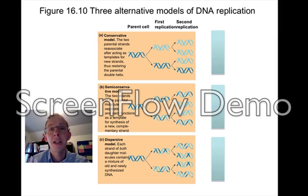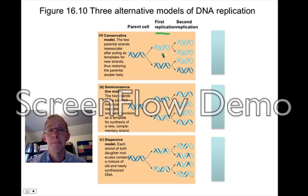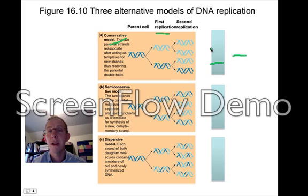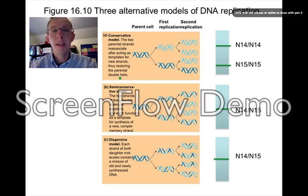I'd like you to predict what you think you would see after completing the same experiment as Meselson and Stahl, starting with just the first replication. After just one replication, if you were to harvest the DNA from the bacteria now growing in N14, what would you expect to see? For the conservative model, we would expect to see one band of heavy N15/N15 and another lighter band containing only N14. Take a moment and do the same for both the semi-conservative and the dispersive model — how many bands would you expect to see, and approximately where would you expect to find them?